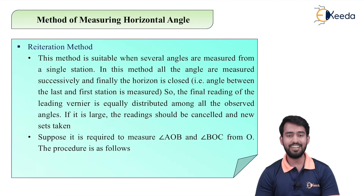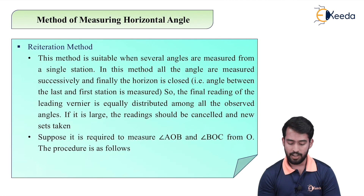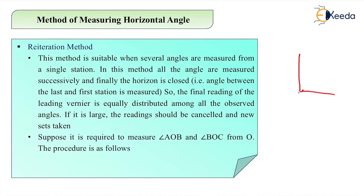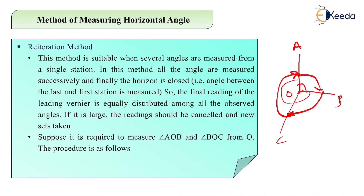The next method is the reiteration method. In the reiteration method, it is suitable when several angles are measured from a single station. For example, if we have to measure angle AOB, angle BOC, and angle COB from a single station O, this method is useful. All the angles are measured successively and continuously, and finally the horizon is closed. The final reading error is equally distributed among all observed angles; if it is large, the reading is cancelled and a new set is taken.